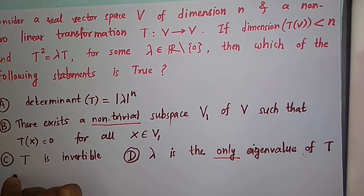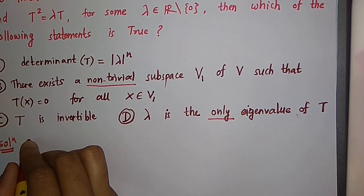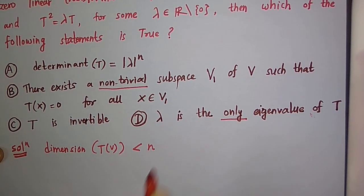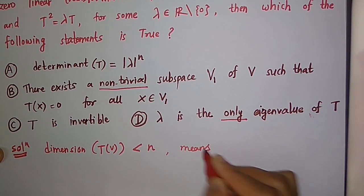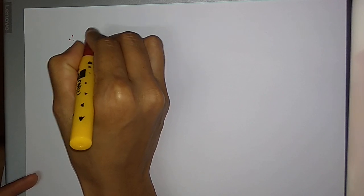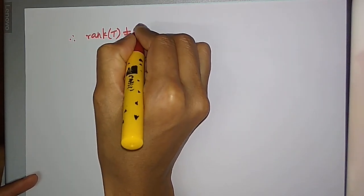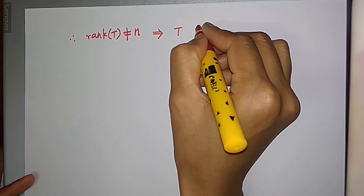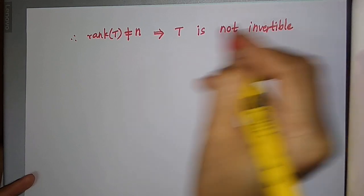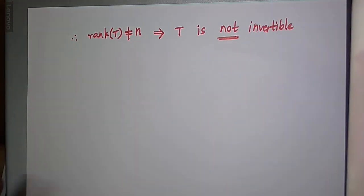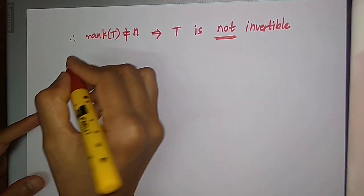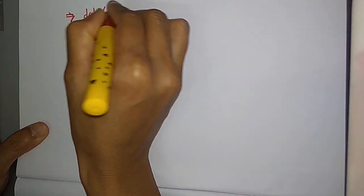Now let us look at the solution. We have that the dimension of the range of T(V) is less than n, which means rank of T is less than n. Therefore rank of T is not equal to n, which implies T is not invertible. Hence option C is incorrect.